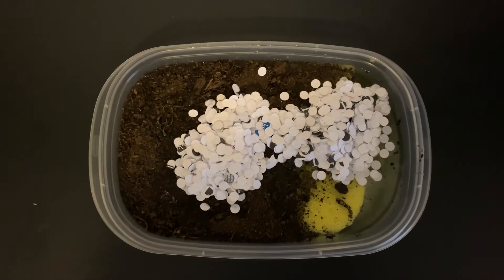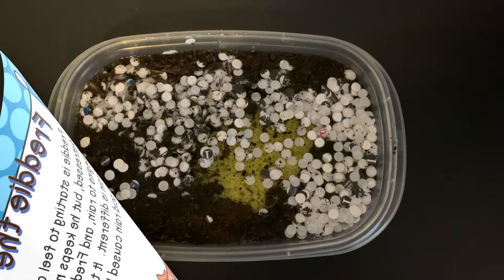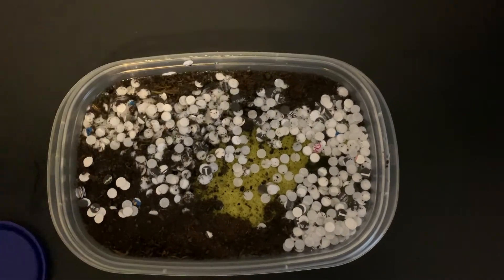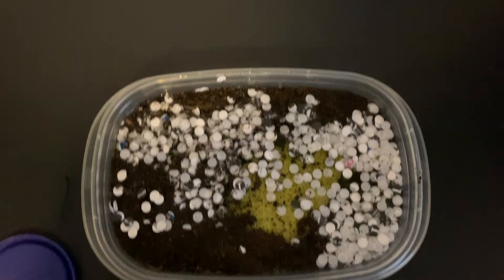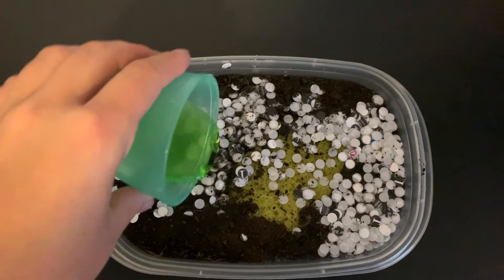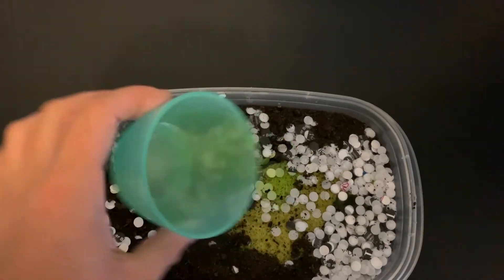Clearly he's not feeling too great — he's feeling pretty gross and can't breathe too well, and he's having a hard time swimming because of all the blockage. Freddie is starting to feel a bit distressed but keeps moving on. It begins to rain, and Freddie notices this rain is different — it turns out it's acid rain caused by air pollution.